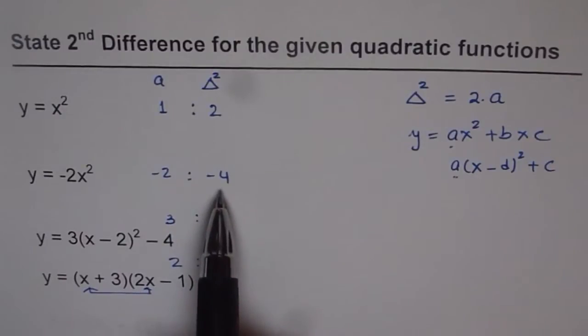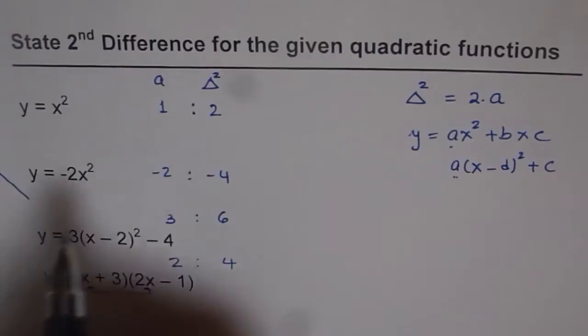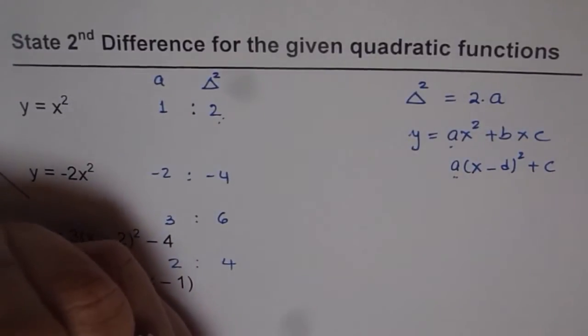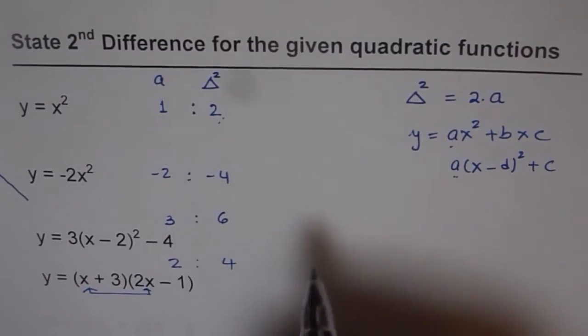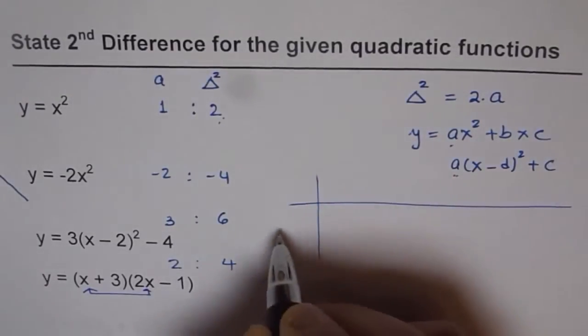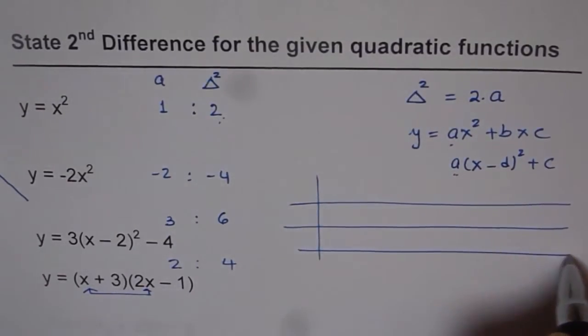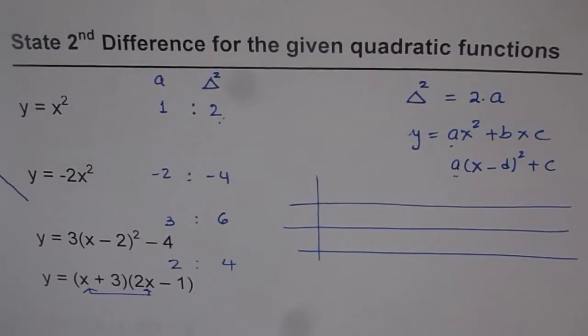So second difference also tells you direction of opening for the parabola. If it is negative that means it is going to open downwards and if it is positive it is going to open upwards. Now as an exercise what I would like you to do is to make a table of values and find first and second difference. You can make this table horizontally or vertically.